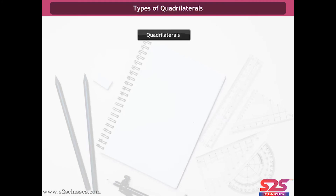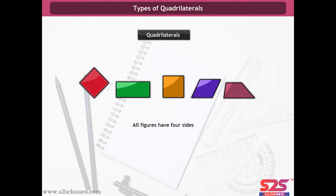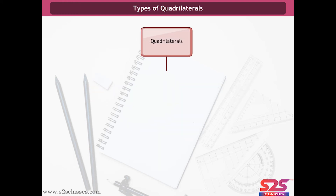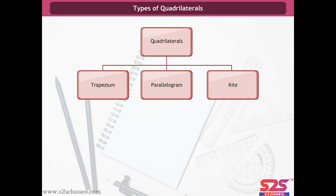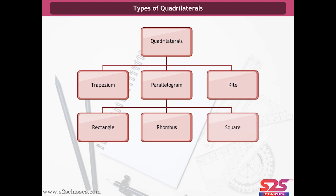Quadrilaterals. Look at these figures — all have four sides. These figures are called quadrilaterals. There are mainly three types of quadrilaterals: trapezium, parallelogram and kite. Parallelogram is further of three types: rectangle, rhombus and square.